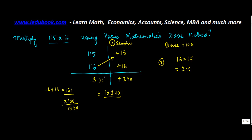Just to explain the concept again: you have to multiply 115 and 116. Find out the base which is closest, so you take 100 as the base. Find out what is the surplus of 115 and 116 against this. So 115 minus 100 gives you 15, and 116 minus 100 gives you 16.